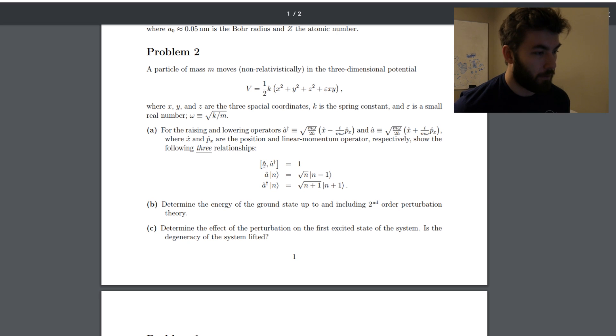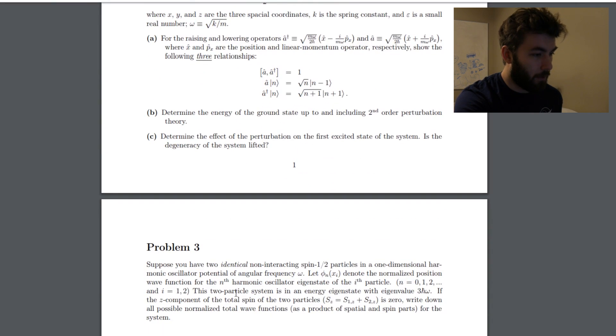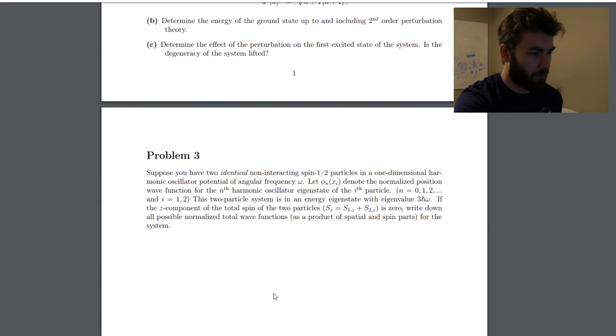So it's doing commutation relation for the raising and lowering operators for basically a harmonic oscillator potential. So far that actually looks really not too bad, doesn't it? Looks kind of easy.